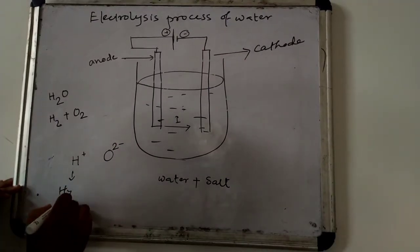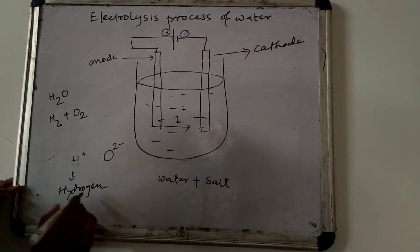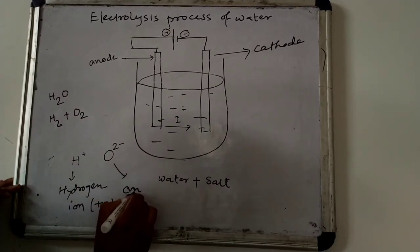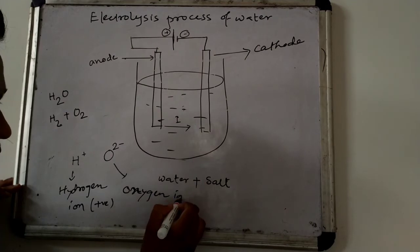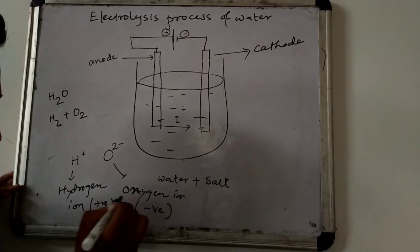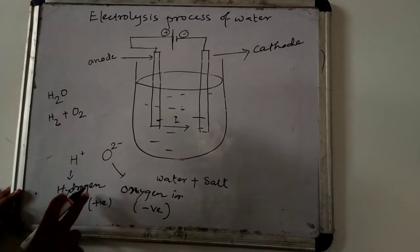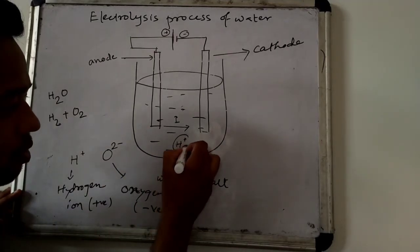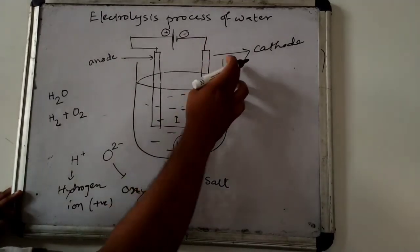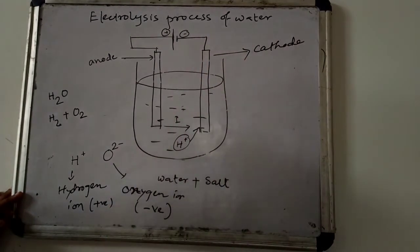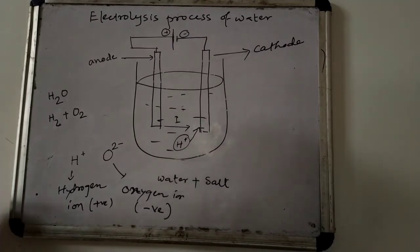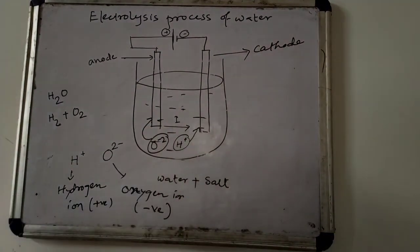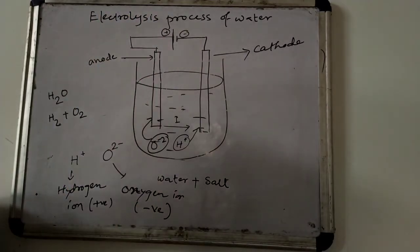First it will create hydrogen ions, which are positively charged, and oxygen ions, which are negatively charged. The H+ ion will move to the cathode because cathode is connected to the negative terminal of the battery — positive is always attracted to negative. And the oxygen ion, which is negatively charged, will move to the anode because the anode is connected to the positive terminal of the battery.